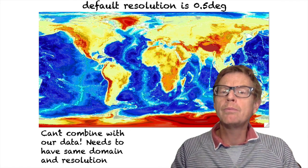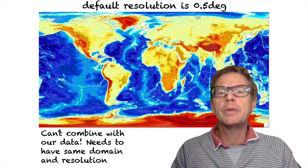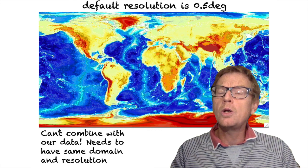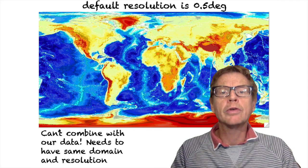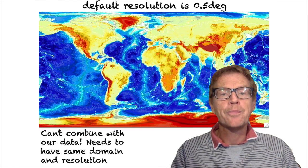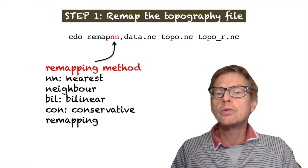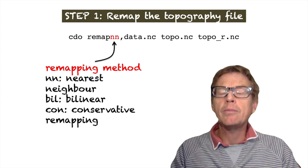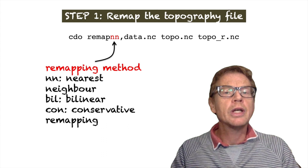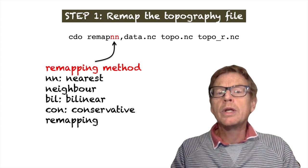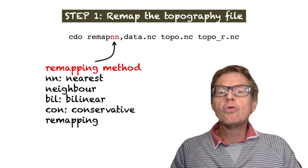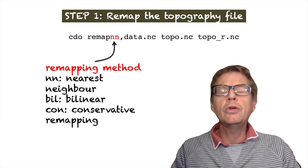But the problem is we can't combine this with our data file because our data file may be on a smaller domain. And even if our data file is global, it won't necessarily be on the same half degree grid. So this means we need to remap the data. Now I've already shown you how to remap a data file using remap. And then n for example, the nearest neighbor, you can see the video in the link just right above my head. We can also use bilinear or conservative remapping. And so we can remap the topographical file to a new file.